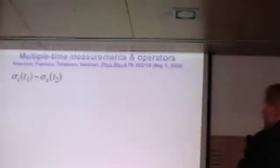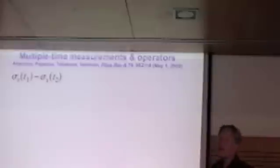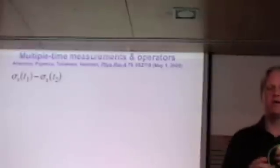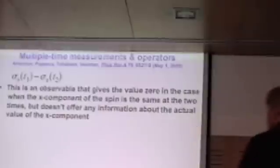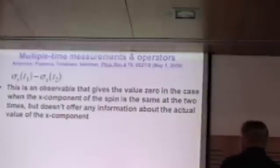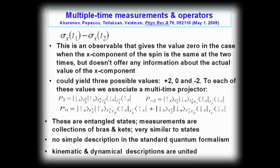So here's an example of a multiple-time measurement. This is measuring sigma x of a particle at one time minus sigma x of the same particle at a different time. And, for example, this can be given out with zero. But you can obtain this result without necessarily knowing what sigma x is at time t1 or knowing what sigma x is at time t2.